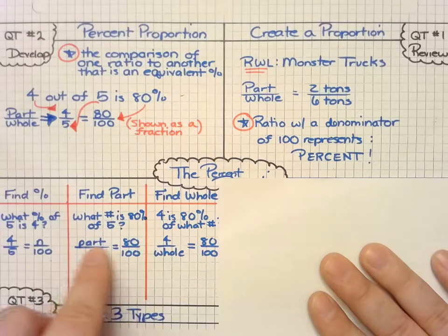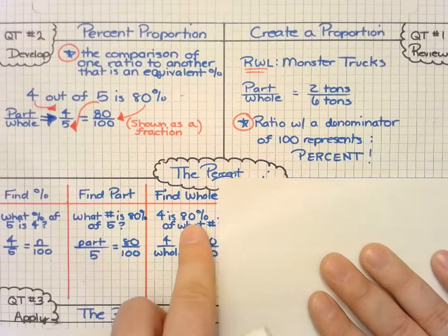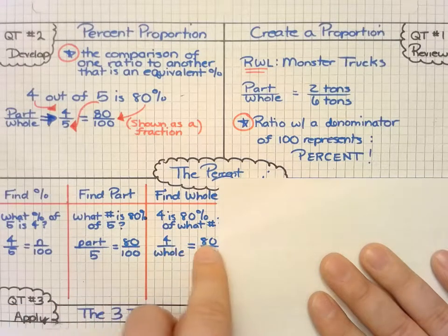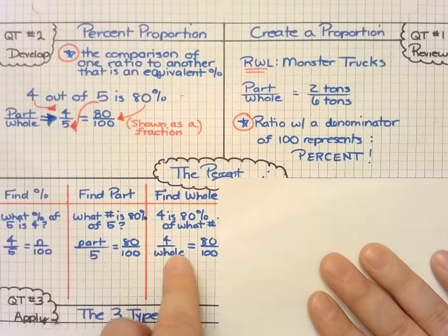So across from the 80 percent is that part. And then over here, four is 80 percent. So again, four is across from the 80 percent of what number, and so I now know that that number that I'm looking for is the whole.